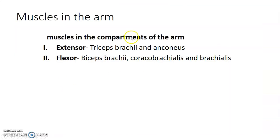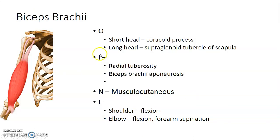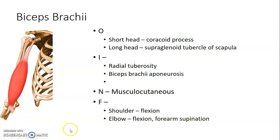We now go to the muscles of the arm. There are two compartments: the extensor compartment with triceps brachii and anconeus, and the flexor compartment containing biceps brachii, coracobrachialis, and brachialis. Biceps brachii has a long head from the supraglenoid tubercle and a short head from the coracoid process, inserting onto the radial tuberosity and bicipital aponeurosis. All muscles in the anterior compartment are innervated by the musculocutaneous nerve. Biceps causes flexion at the glenohumeral joint, flexion at the elbow, and supination of the forearm when the elbow is flexed.